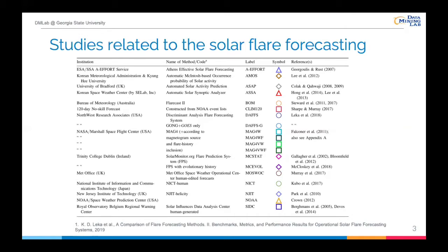Over the past two decades, researchers have implemented various methods to classify strong and weak solar flares. As we can see in the given table, it summarizes multiple approaches for flare forecasting. It tells us there are many perspectives to classify flares, and there is no single winner among these methods. This work wants to provide a new angle: we obtain the imaging of time series first, and then use these images with CNN to do classification. This is indeed a novel way and worth studying.